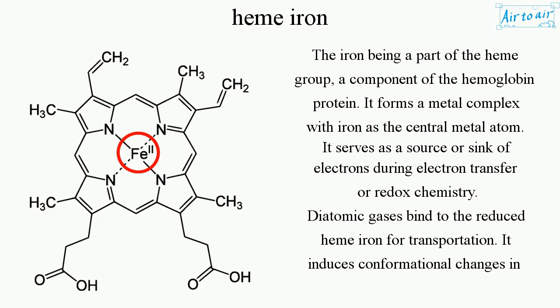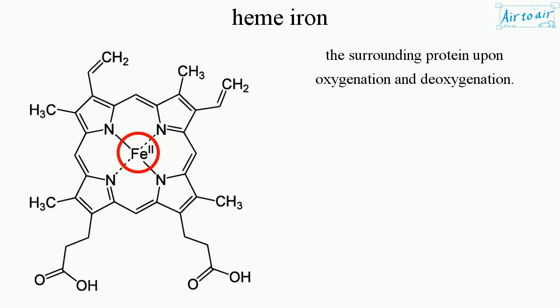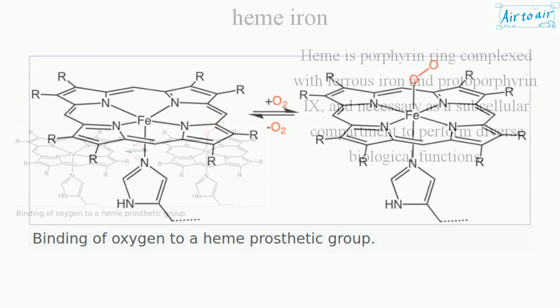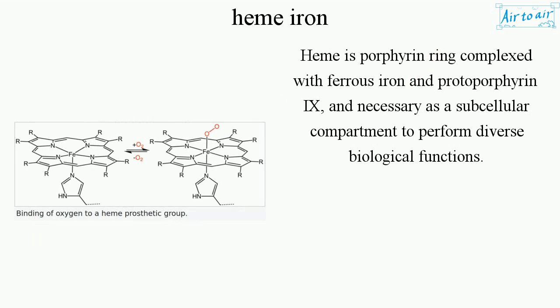Diatomic gases bind to the reduced heme iron for transportation. It induces conformational changes in the surrounding protein upon oxygenation and deoxygenation. Heme is a porphyrin ring complexed with ferrous iron and protoporphyrin X, and necessary as a subcellular compartment to perform diverse biological functions.